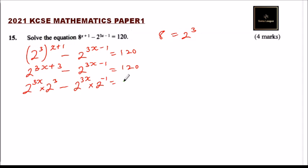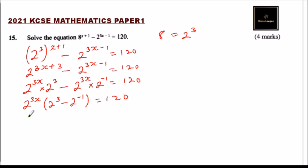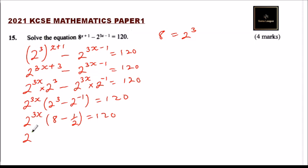We factor out 2^(3x), leaving us with 2^(3x) × (2^3 - 2^(-1)) = 120. Now 2^3 = 8 and 2^(-1) = 1/2, so the bracket becomes 8 - 1/2.